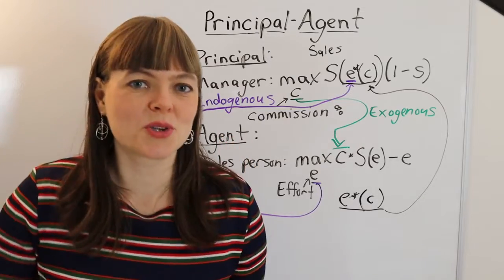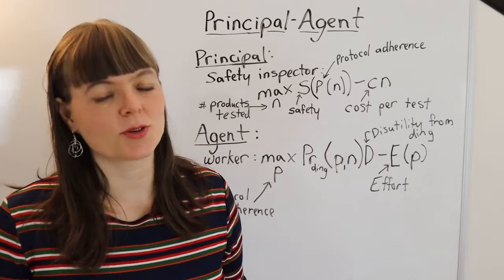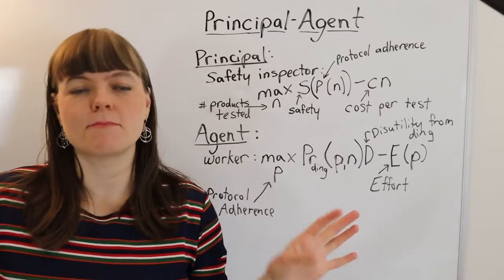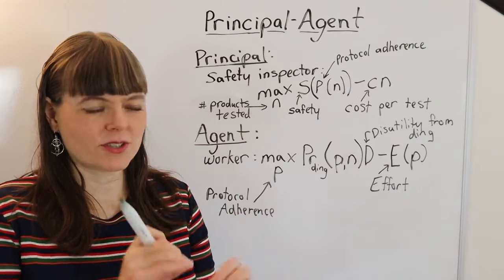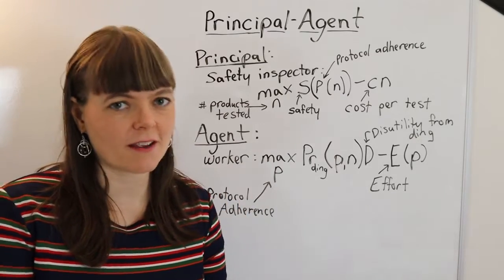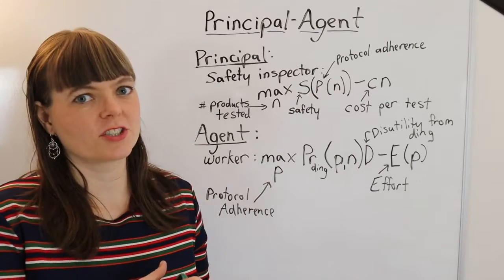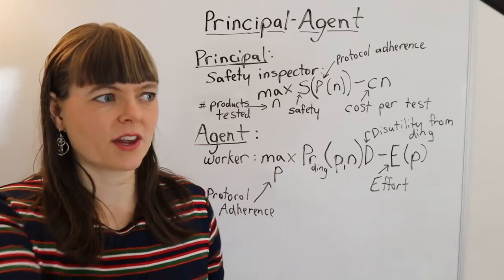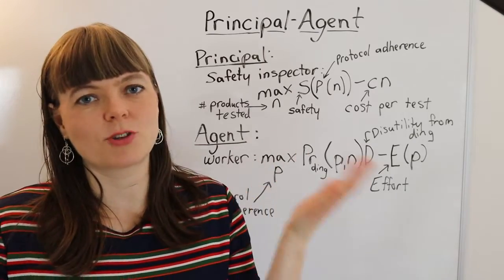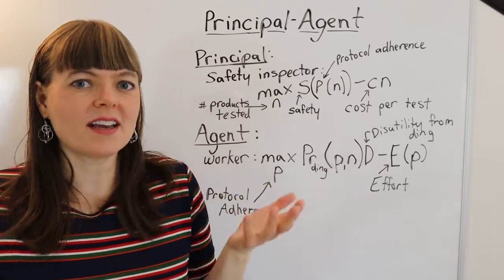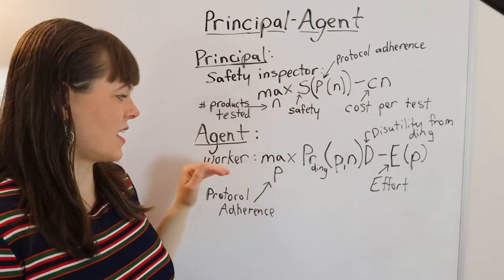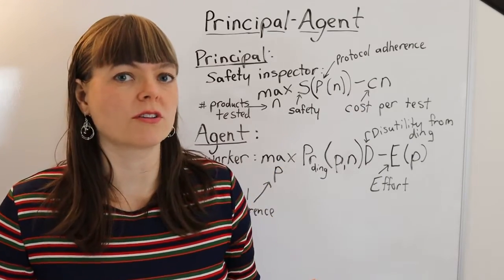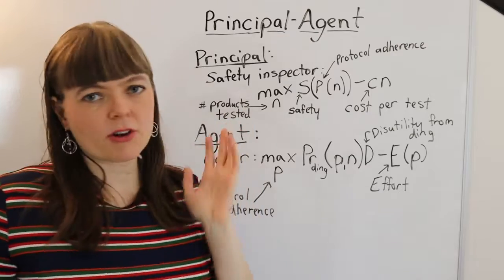So let me just show you two more examples. The second principal agent situation I would like to look at is a safety inspector for a factory that makes kids toys, where if you test the toys, you can find which ones are unsafe, which ones should not be sold to kids. But of course, it's expensive to test the toys, so they can only sample a certain number of toys to test in this way. And the idea is that the safety inspector wants to influence the worker's behavior, such that the worker follows certain protocols that will lead to safe products.